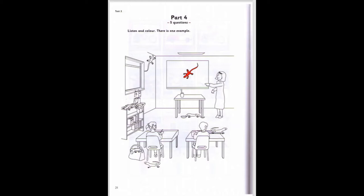Can you see the board in the picture? Yes. Now, can you see the lizard on it? Yes, I can. Colour it red. The lizard on the board. OK, it's red now. Can you see the red lizard on the board? This is an example.